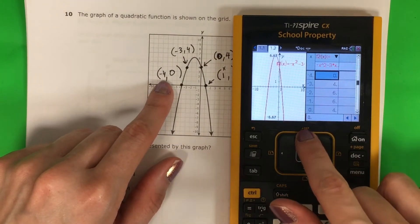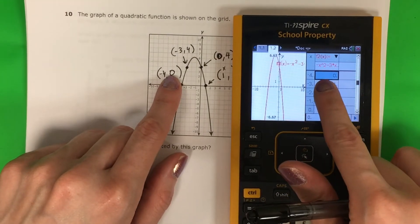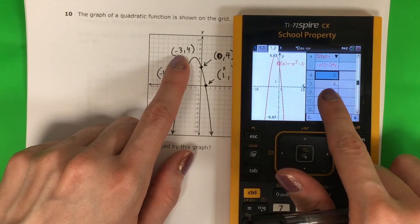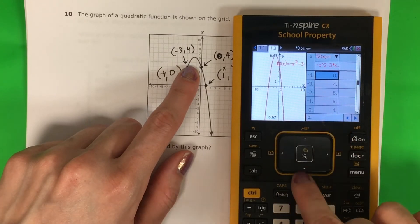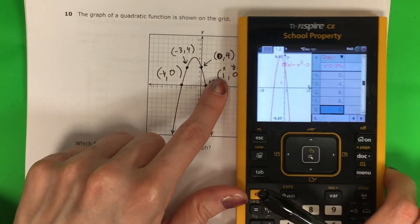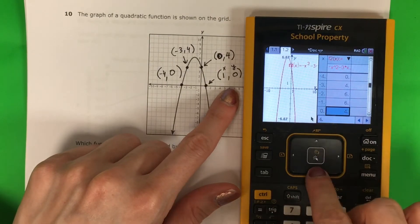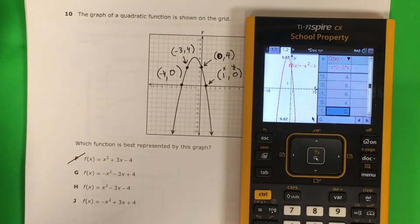Let's go to negative 4. Negative 4, 0, good. Negative 3, 4, good. 0, 4, good. And 1, 0, perfect. There's my answer, G.